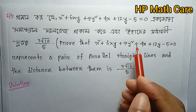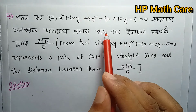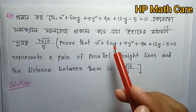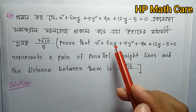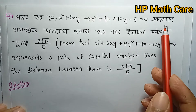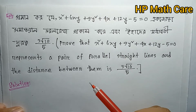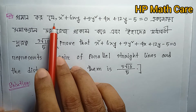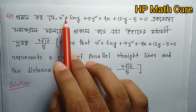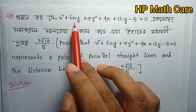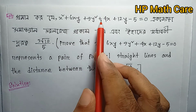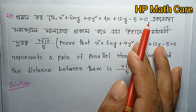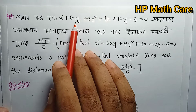Welcome. Today we are going to look at vector geometry — specifically a pair of straight lines. The problem to solve is: x squared plus 6xy plus 9y squared plus 4x plus 12y minus 5 equals zero.